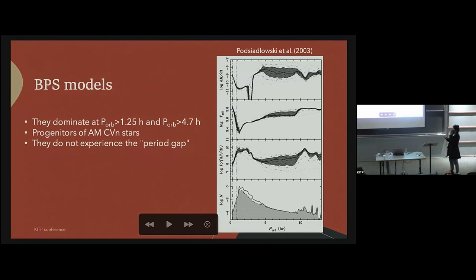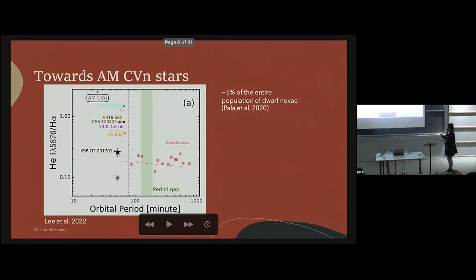Some binary population synthesis models for cataclysmic variables including evolved systems show three major conclusions. If you pay attention to the bottom panel of this figure, we see that evolved donors dominate below orbital periods of 1.25 hours and also they dominate for orbital periods larger than five hours. These systems have been suggested to be progenitors of ultra compact white dwarf binaries like AM CVn stars. Another thing they saw in their models is that these systems do not present the period gap.